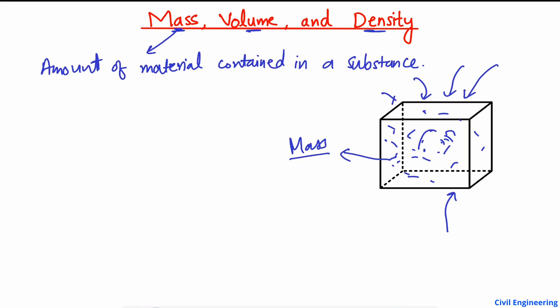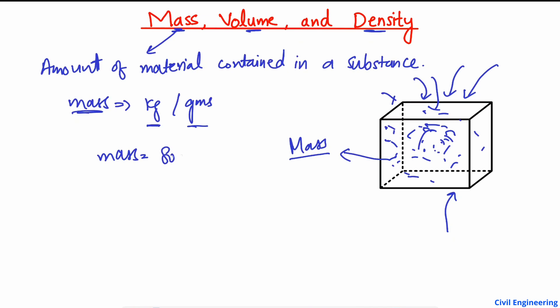Mass is represented in units of kilograms or grams — these are the most common units. We also have milligrams and others, but kilograms and grams are most commonly used in civil engineering. For example, if we put this concrete into a machine and measure it, the mass of this concrete in this object is 800 kilograms.